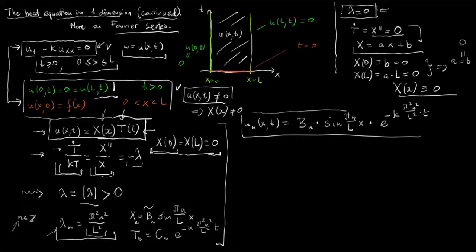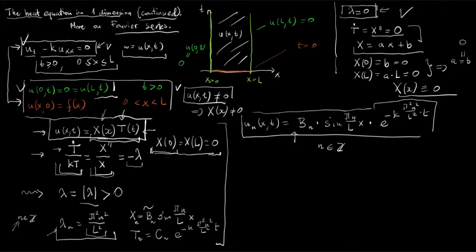Looking for solutions satisfying the heat equation and the boundary conditions in product form, we found as many solutions as there are integers. Since n=0 corresponds to lambda=0 (excluded), and solutions with negative n differ from positive n only by sign, we restrict to n being natural numbers 1, 2, 3, and so on.